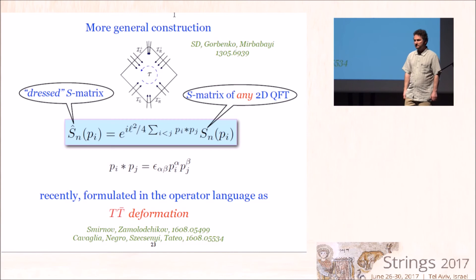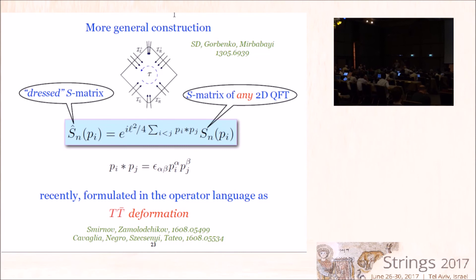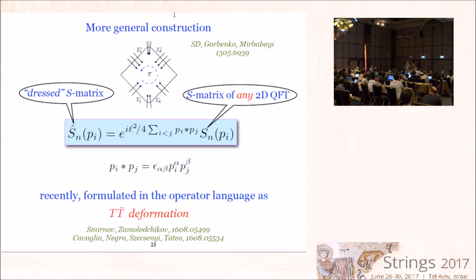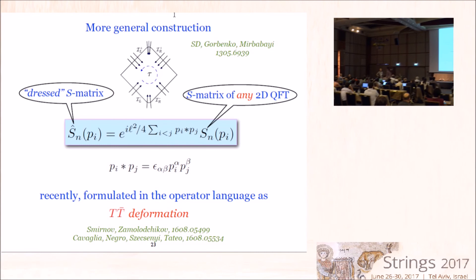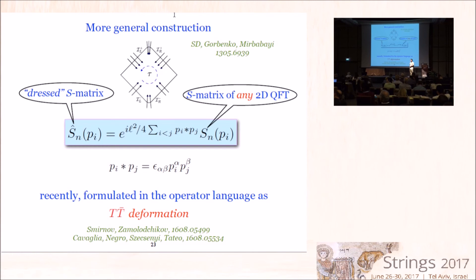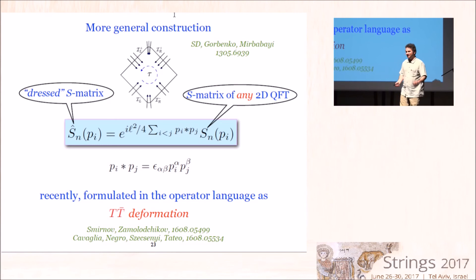Q: Is there a similar string theory background interpretation for the string with the axion, analogous to the linear dilaton background for the scalar? If the axion is massless, you expect integrability — does that correspond to some exact string background? A: We have a rigorous proof that the theory is integrable in that case, yes. It should correspond to some exact string background, and personally I think one should find it, but I don't know what that background is — it's a very good question.